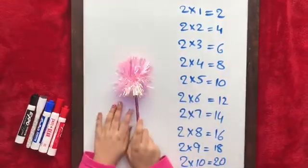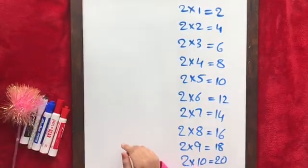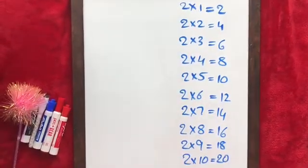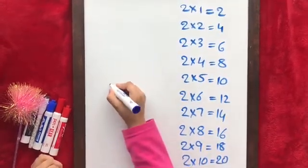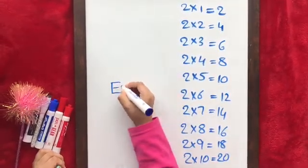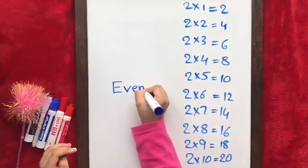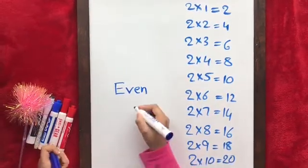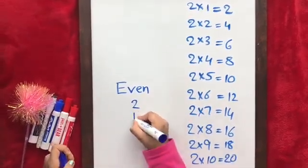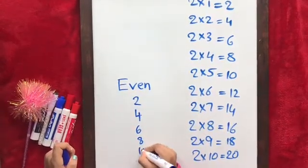And now let's see the easy trick. The first one is even. We can count by even numbers. What are even numbers? Even numbers are like 2, 4, 6, 8, 10, and more.